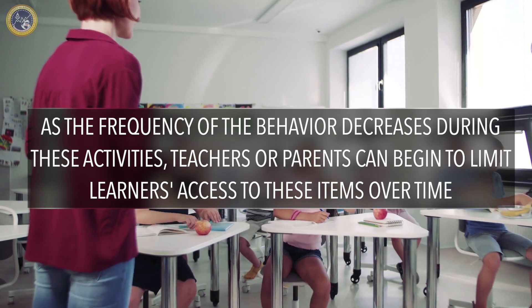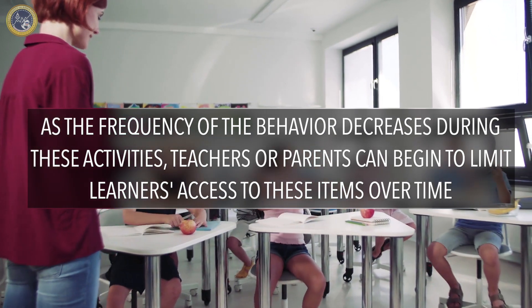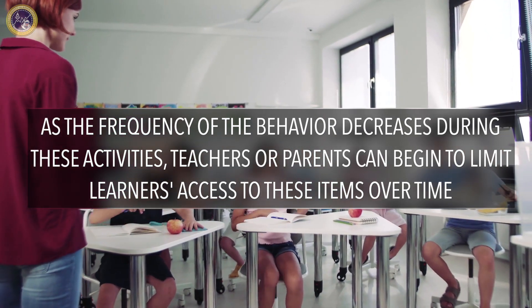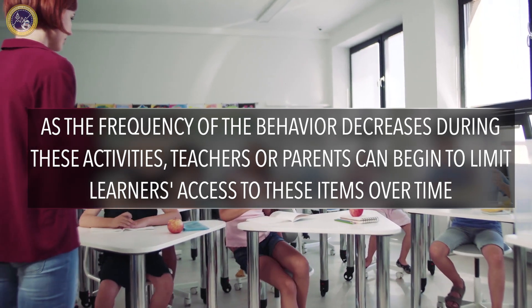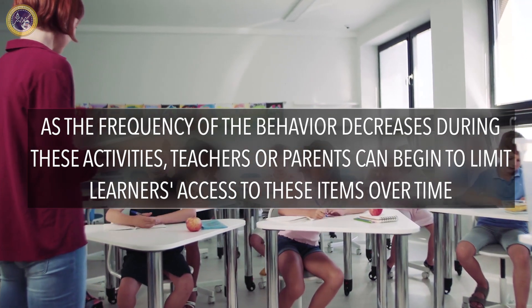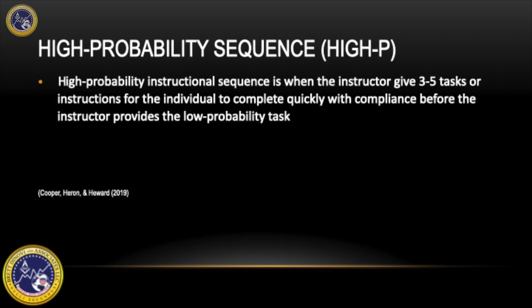As the frequency of the behavior decreases during these activities, teachers or parents can begin to limit learners' access to these items over time. The next intervention I will discuss is high probability sequence, or high-P. High probability instructional sequence is when the instructor gives three to five tasks or instructions for the individual to complete quickly with compliance before the instructor provides low probability tasks, which require more response effort.